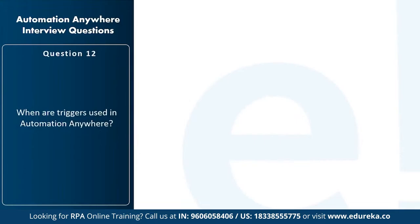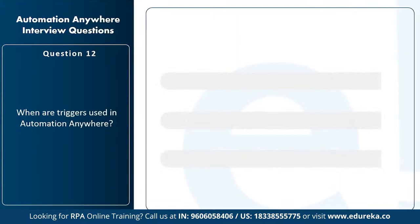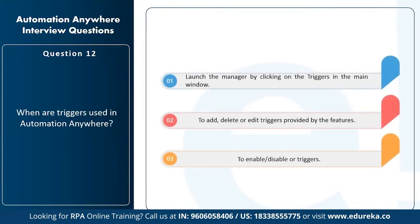Next question: when are Triggers used in Automation Anywhere? Triggers are used to: launch the trigger manager by clicking Triggers in the main window; add, delete, or edit triggers provided by the features; and enable or disable triggers.